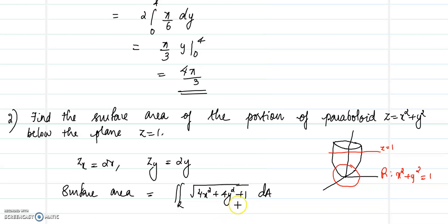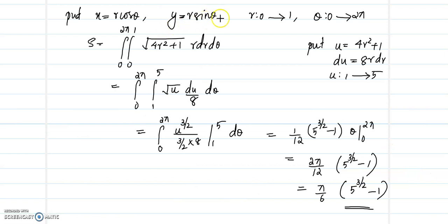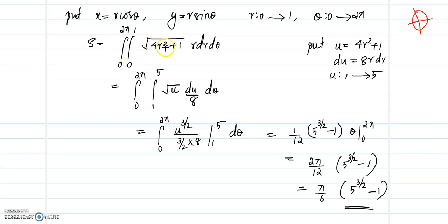We use polar coordinates to evaluate this integral easily. Setting x = r cosθ and y = r sinθ, our region R is the unit circle x² + y² ≤ 1, so r varies from 0 to 1 and θ varies from 0 to 2π. Replacing x, y, and dA, we get the integral from 0 to 2π and 0 to 1 of √(4r² + 1) · r dr dθ.